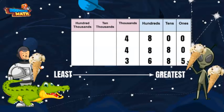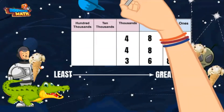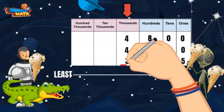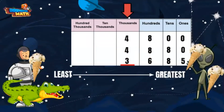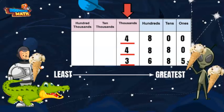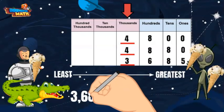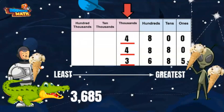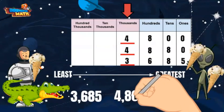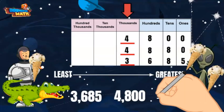We already know that 4,800 is less than 4,880. We need to see where 3,685 falls in the lineup. Let's compare again digit by digit starting from the largest place value. The new number has a 3 in the thousands place, while the other two numbers have a 4. This means 3,685 is less than the other two numbers. Since we are ordering from least to greatest, this number goes at the beginning of the list. Next would be 4,800, and our biggest number is 4,880.